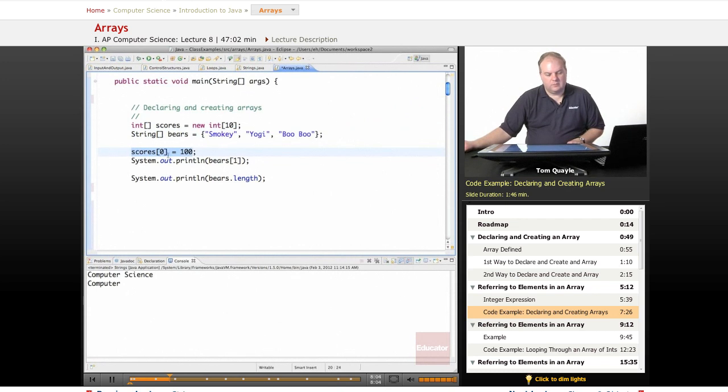I can reference position 0 in the scores array and insert a value by putting that value on the right-hand side of the assignment operator, the single equal sign. Or I can get a value from an array by providing that position number and passing that to print line. If I want to find the number of items in an array, I call the dot length method, and that returns me an integer, which then I can also print out.